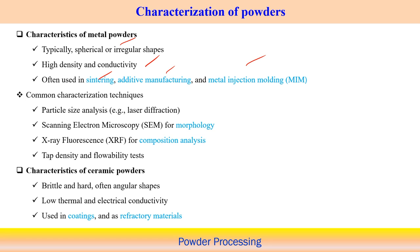Common characterization techniques for metallic powders include: particle size analysis using laser diffraction to understand particle size and distribution; scanning electron microscopy for morphology of particles; XRF (X-ray fluorescence) for composition analysis; and tap density and flowability tests to understand applicability of metallic powders for manufacturing processes.